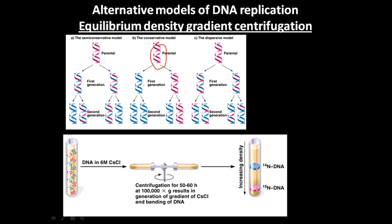In the conservative model, the old strand facilitates the formation of a new strand. In the first generation, you have a 50/50 chance of having a new strand and an old strand — that's why it is called the 50/50 in the conservative scheme. It is called the conservative model because the parental DNA remains the same and new DNA is formed — the original structure is conserved.